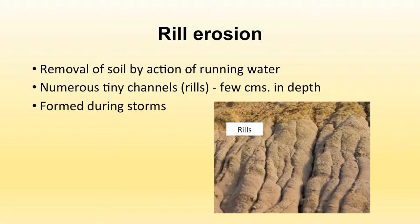The third type is rill erosion. Rills are small thin channels formed on the earth's surface when water flows during heavy rainfall. Water gets transported in these very thin channels — like fingers — and these channels are known as rills. Through rills, soil particles are removed by water, eroding the top layer of soil. Rills can be a few centimeters in depth.